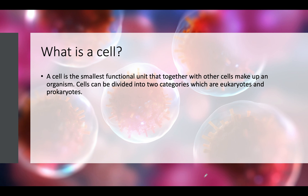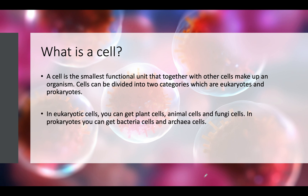A cell is the smallest functional unit that, together with other cells, makes up an organism. Cells can be divided into two categories: eukaryotes and prokaryotes. In a eukaryotic cell you can get plant cells, animal cells, and fungi cells. In prokaryotes you can get bacteria cells and archaea cells.